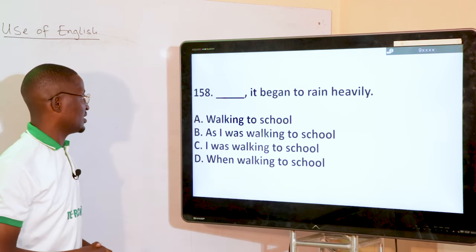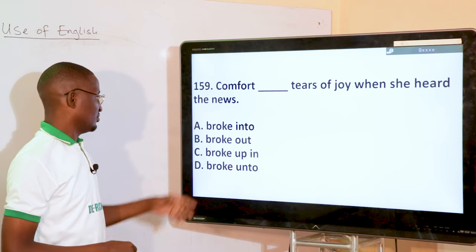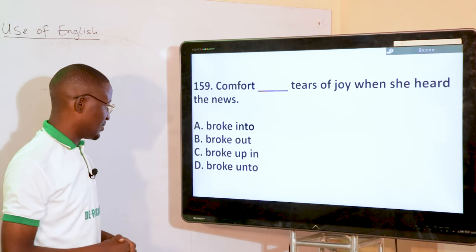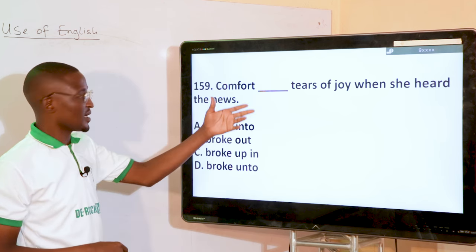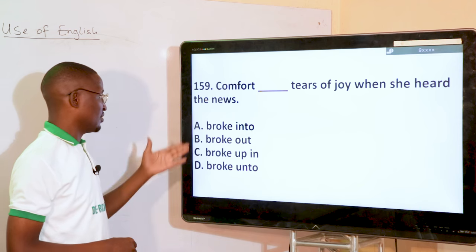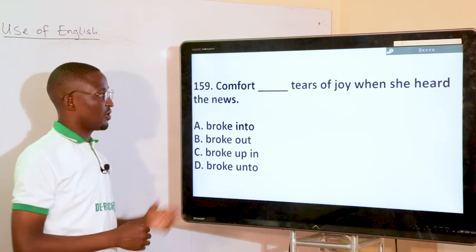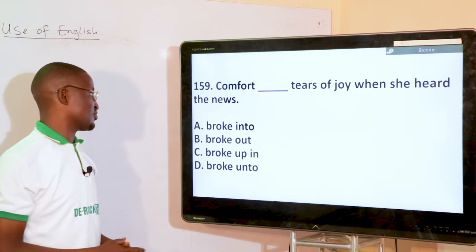Comfort dash tears of joy when she heard the news — broke into, broke out, broke up in, broke onto. Of course, the correct phrasal verb is 'broke into tears.' Comfort broke into tears of joy when she heard the news. That is option A.